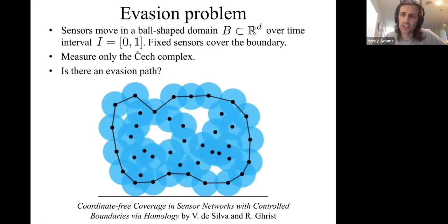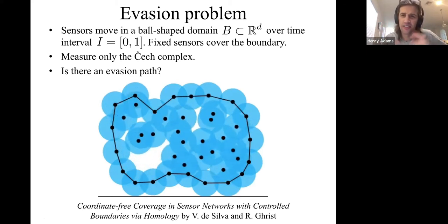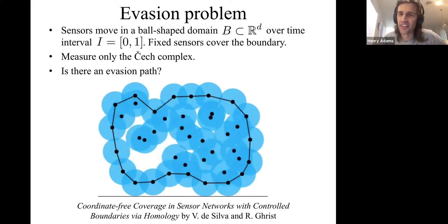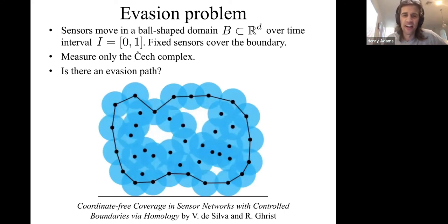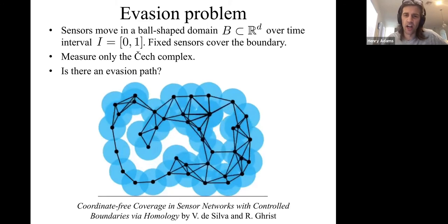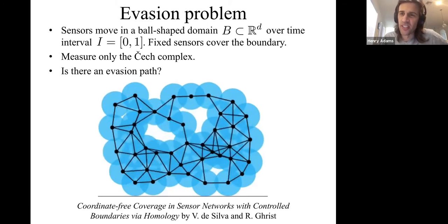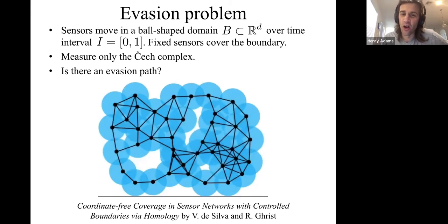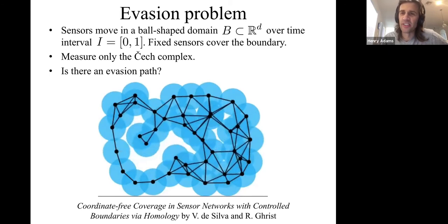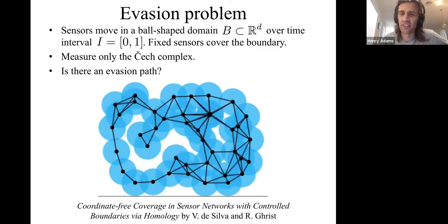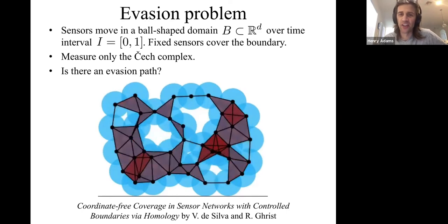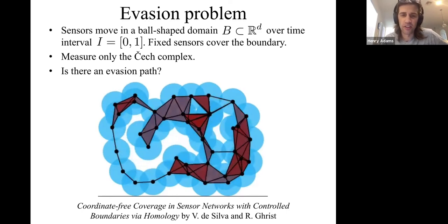If the sensors measure GPS coordinates, just look at the video of how the sensors are moving and you can decide. But what if the sensors only measure connectivity information? When two sensors are overlapping, we measure this edge. Or when three sensors intersect, we measure this triangle of three-point intersection.